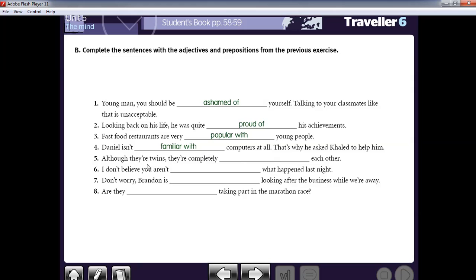Number five. Although they are twins, they are completely different from each other. Here they are twins, but they are not the same. They are different from each other. Now sentence number six. I don't believe you aren't curious about what happened last night. You are not curious about.